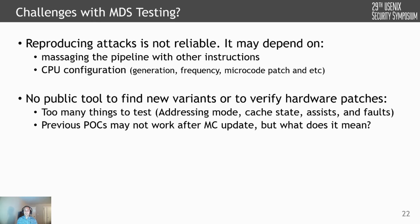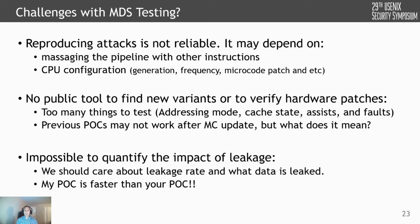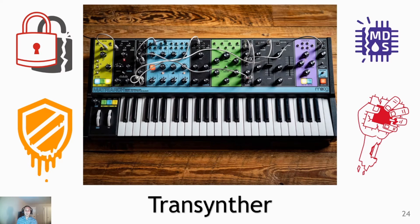Even if you want to test new hardware, we don't know how many things to test. In addition, it's hard to quantify the impact of these attacks because some POCs may leak on one system but not another, and the leakage rate is generally not very clear. The Transinter tool is supposed to actually solve some of these problems.